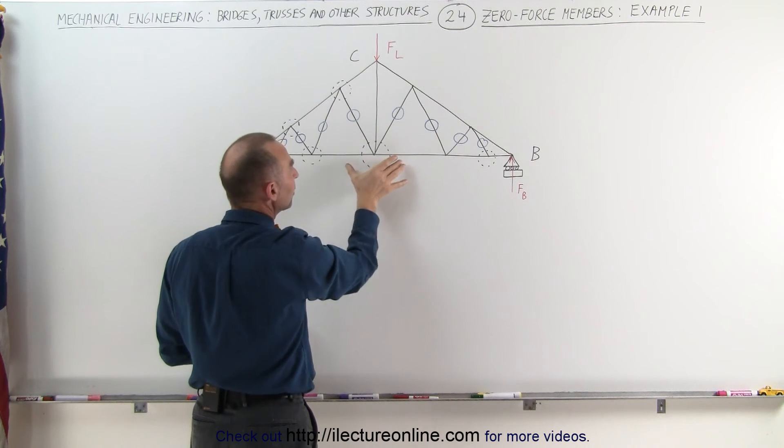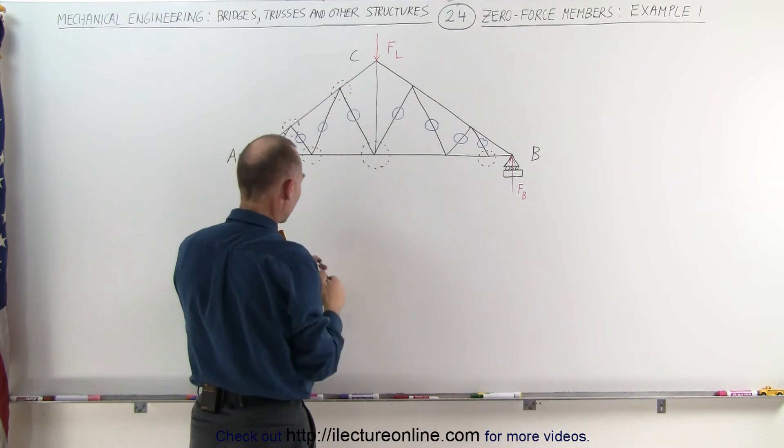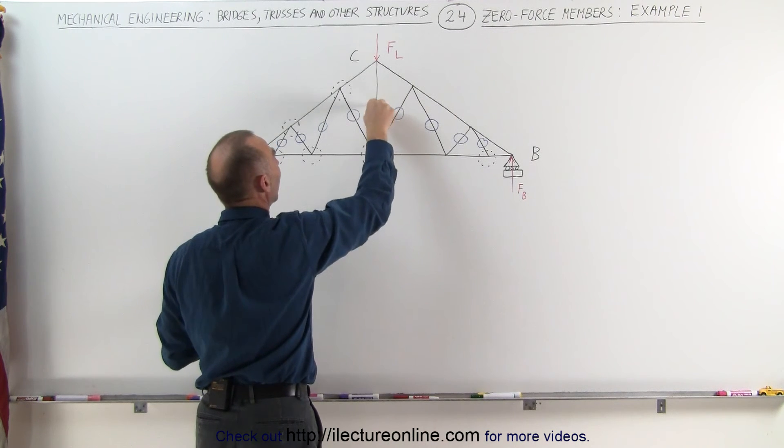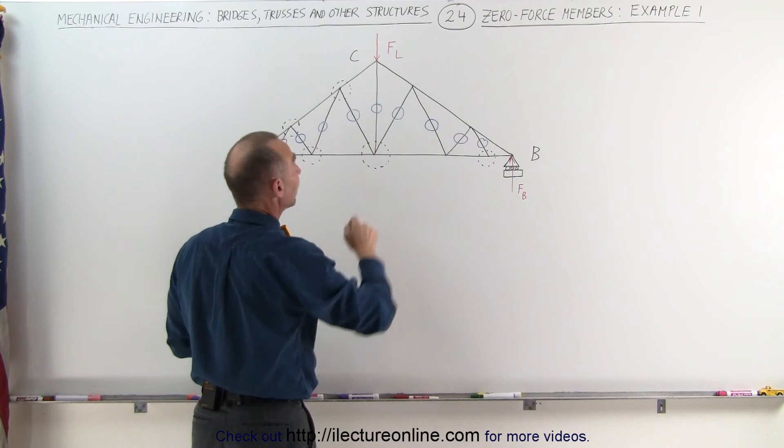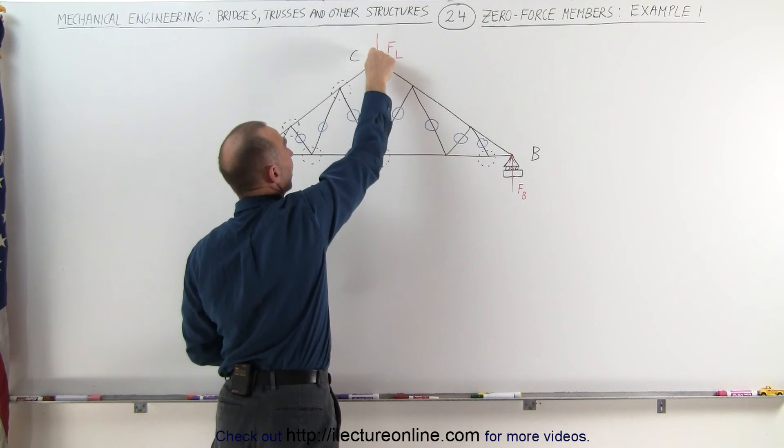Two of the three members then would be collinear, the third one is not, which means this member also does not have a force. It's also a zero force member. Even though there's a load pointing directly towards it,